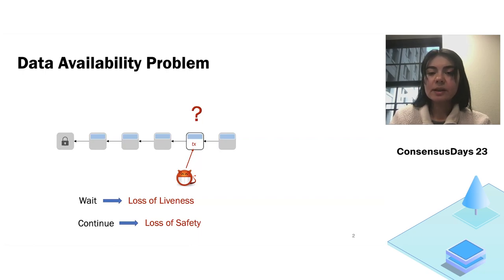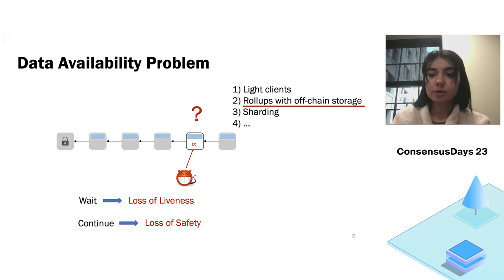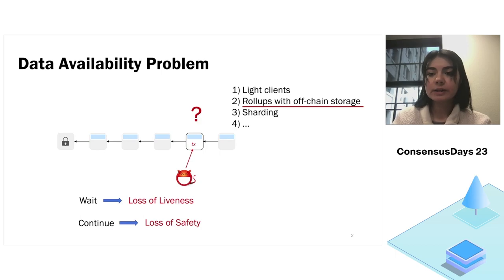And so this is a data availability problem. Of course, it's more nuanced than that. But as I said earlier, it arises in many different scenarios. And as you saw here, light clients have this problem. Also, this problem arises in rollups with off-chain storage and sharding and many, many other cases. But here in this talk, I will focus on rollups with off-chain storage. But before I do that, I want to stress out that the solution that I am going to show you today is applicable actually more widely when it comes to horizontal scaling of blockchains, and it can also be used to scale the base layer, the underlying consensus layer. But for now, let's focus on rollups.